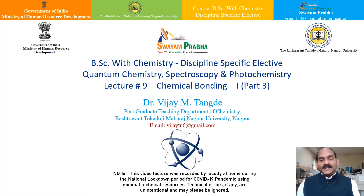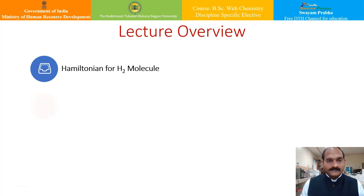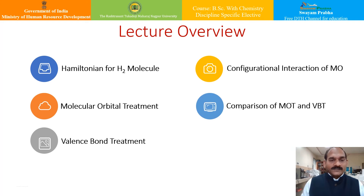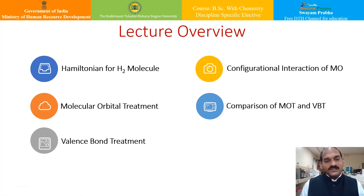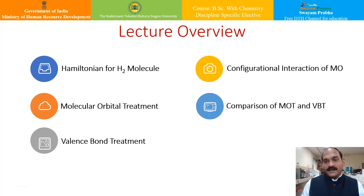In this lecture, we will see the application to hydrogen molecule and simple diatomic molecules. We will first set up the Hamiltonian for hydrogen molecule, as it involves a four-body problem — two nuclei and two electrons. Then we will see the molecular orbital treatment, the valence bond treatment, configurational interaction of molecular orbitals, and finally the comparison of molecular orbital theory and valence bond theory.